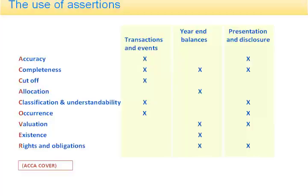If audit evidence is not found supporting an assertion, you have no idea whether that assertion is correct or not. So if you don't make sure that the ownership of the motor vehicles belongs to the company, you might be making an error — it might be using vans, but there might be rental vans. If you don't ensure that the depreciation has been calculated correctly, how do you know that the valuation is proper? So every single assertion that a figure in the financial statements makes requires some audit evidence.